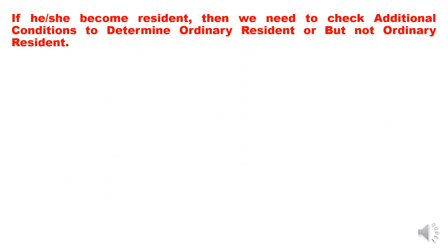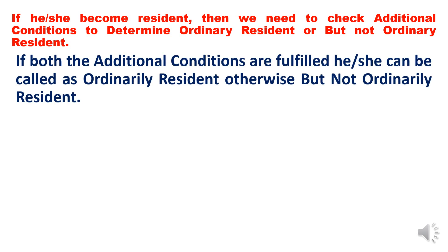Once we understand the basic conditions, we take up the additional conditions. These additional conditions are used to determine whether a resident is 'ordinarily resident' or 'not ordinarily resident'. The additional conditions are applied only once an individual becomes a resident. If he becomes a non-resident, we do not apply the additional conditions. If both additional conditions are fulfilled, he or she is called 'ordinarily resident'; otherwise, they are 'not ordinarily resident'.